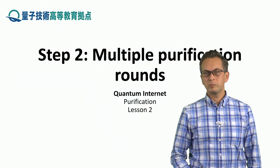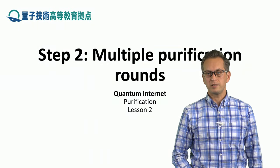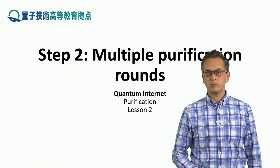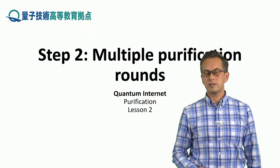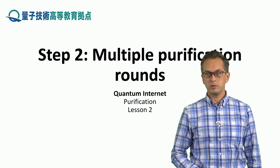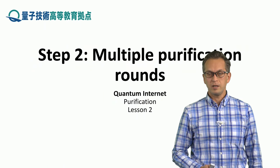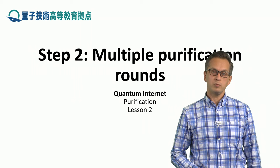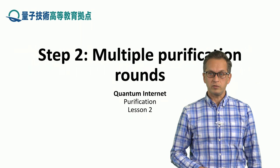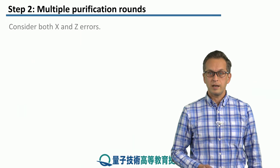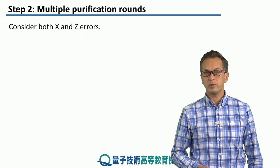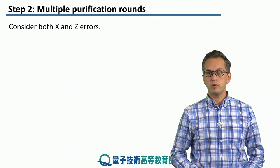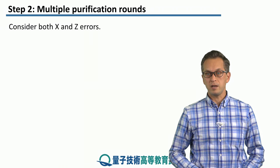Step 2: Multiple purification rounds. In the previous step, we considered only a single round of purification. Now we're going to consider what happens when we do multiple rounds of purification, as well as what happens when the state is affected by both x and z errors.